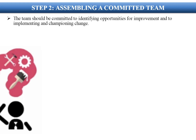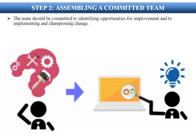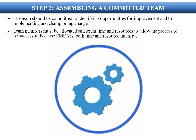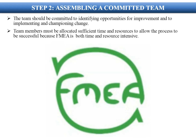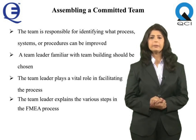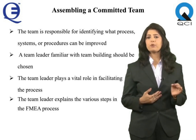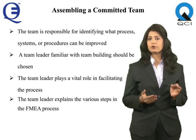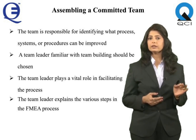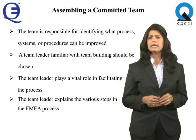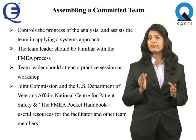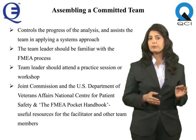Step 2: assembling a committed team. The team should be committed to identifying opportunities for improvement and to implementing and championing change. Team members must be allocated sufficient time and resources to allow the process to be successful, as FMEA is both time and resource intensive. When FMEA is being applied for continuous improvement, the team is responsible for identifying what processes, systems, or procedures can be improved. A team leader or facilitator should be chosen who is familiar with and skilled in teamwork and team building.